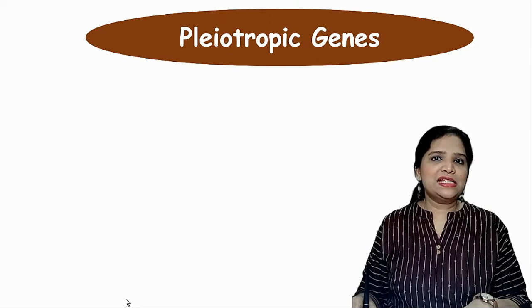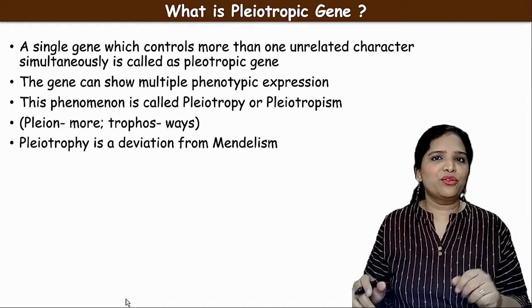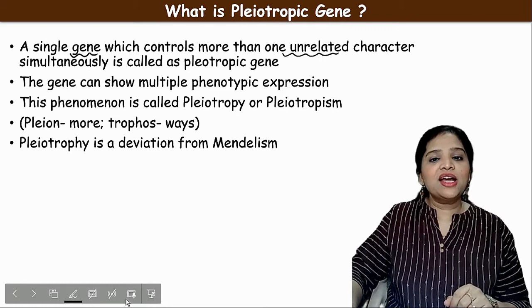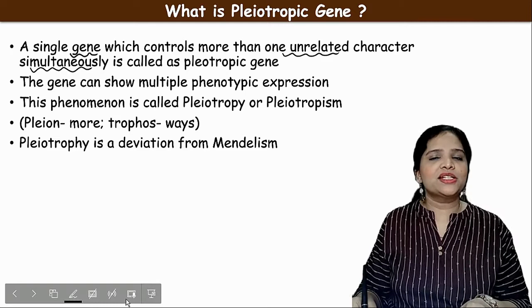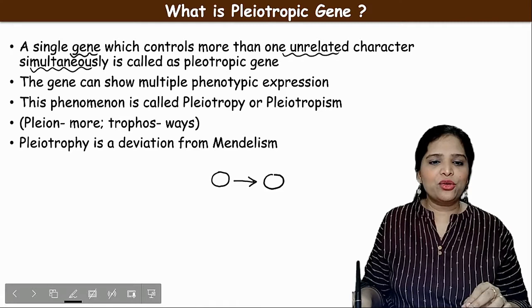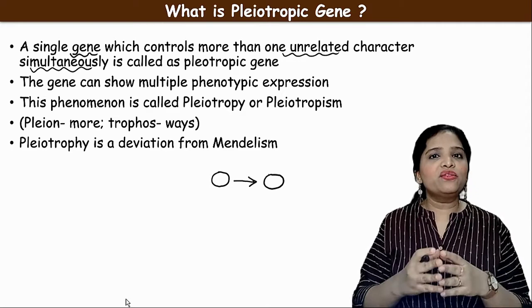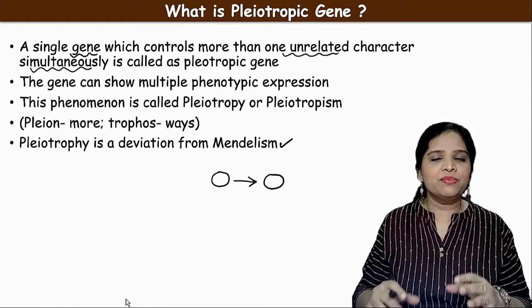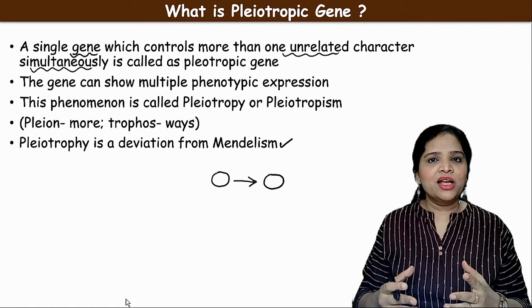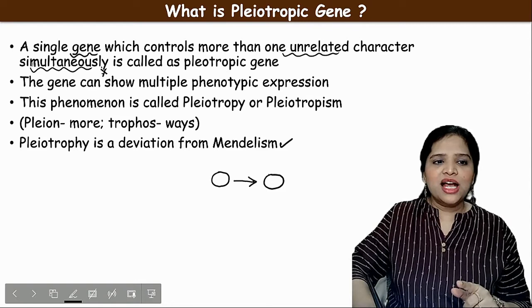What is a pleiotropic gene? A single gene which controls more than one unrelated character simultaneously is called a pleiotropic gene. We know that in Mendelian genetics one character of an organism is controlled by one gene — that is the normal classic Mendelian genetics. Whereas the pleiotropic gene is an example of non-Mendelian genetics, a deviation from Mendelism where one gene controls different unrelated characters in an organism simultaneously.